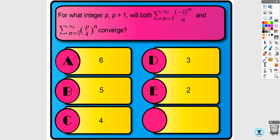The last example involves a p-series type question that appears often in multiple choice. For the series to converge, the signs need to alternate — if they don't, it diverges by the p-series test. So the exponent can't be even; eliminate all even answer choices, leaving three or five. For the geometric series part, the ratio must be less than one to converge, so the exponent can't be five because that gives five over four, which is greater than one. The answer must be D.